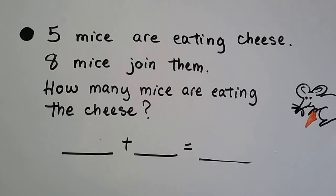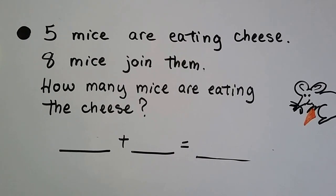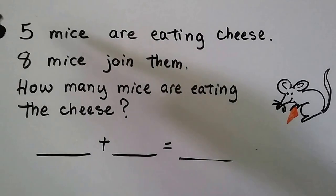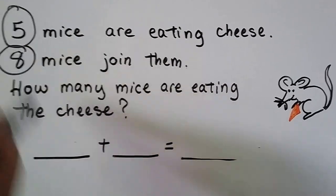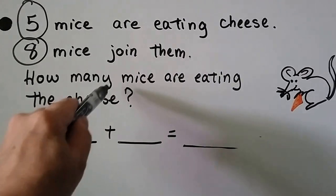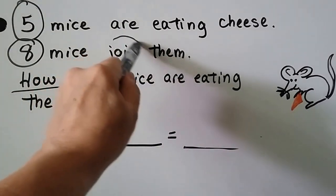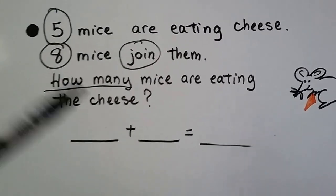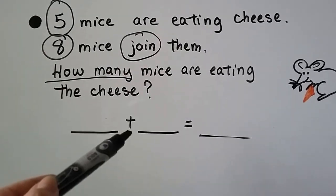Five mice are eating cheese. Eight mice join them. How many mice are eating the cheese? We circle our important information — our important numbers and words. We have five and eight. The important word here is 'join' — that means there were more. We had five and we're joining eight, which means we're adding.